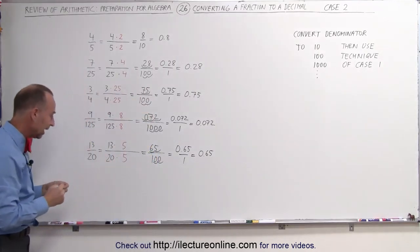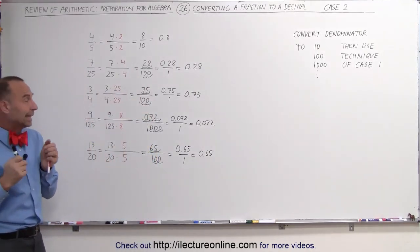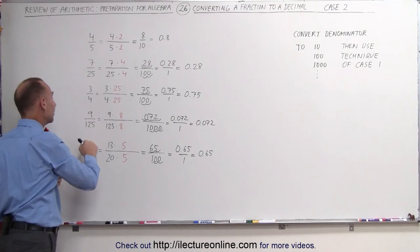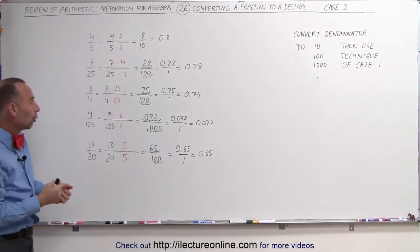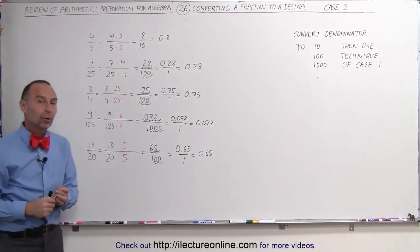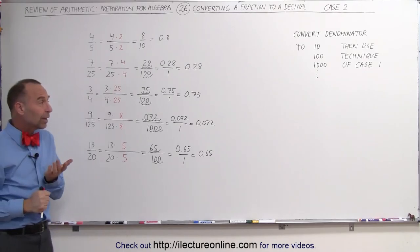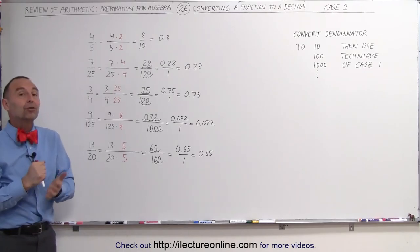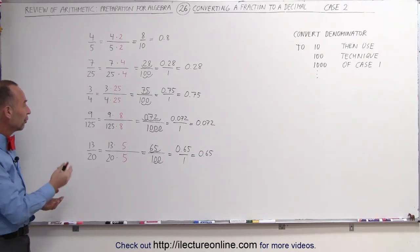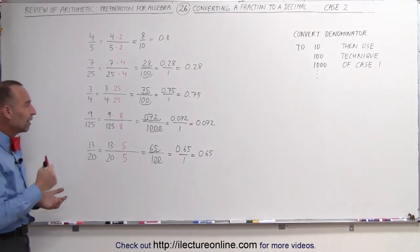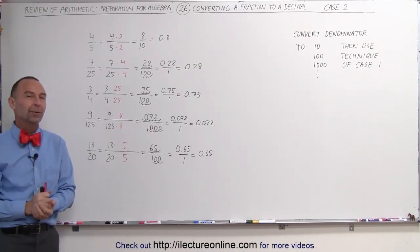And that's how we convert a fraction to a decimal in the case where we can take the denominator and make it into a 10, a 100, or a 1000. The next case will be where we cannot do that, and we need to find a different technique to convert a fraction to a decimal. Stay tuned if you want to see how we do it that way.